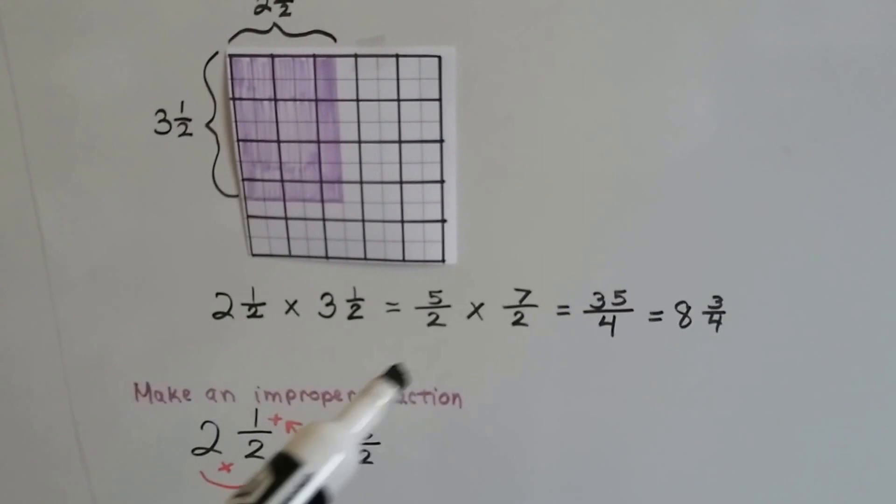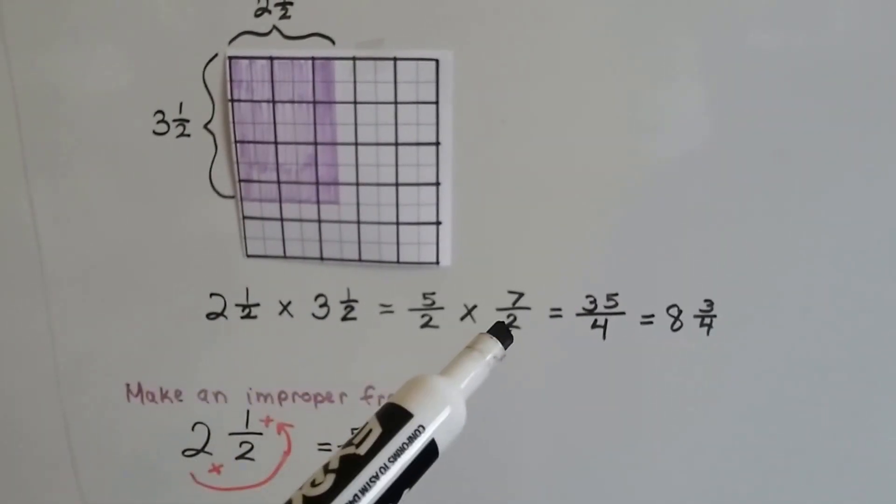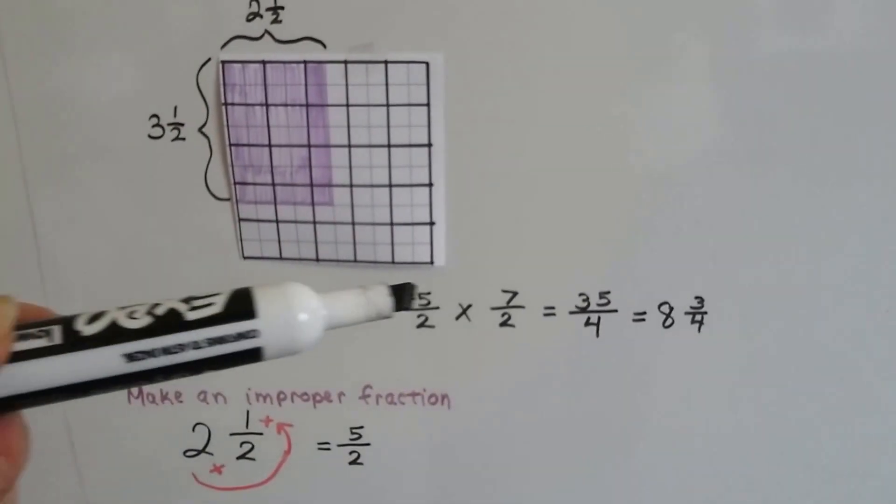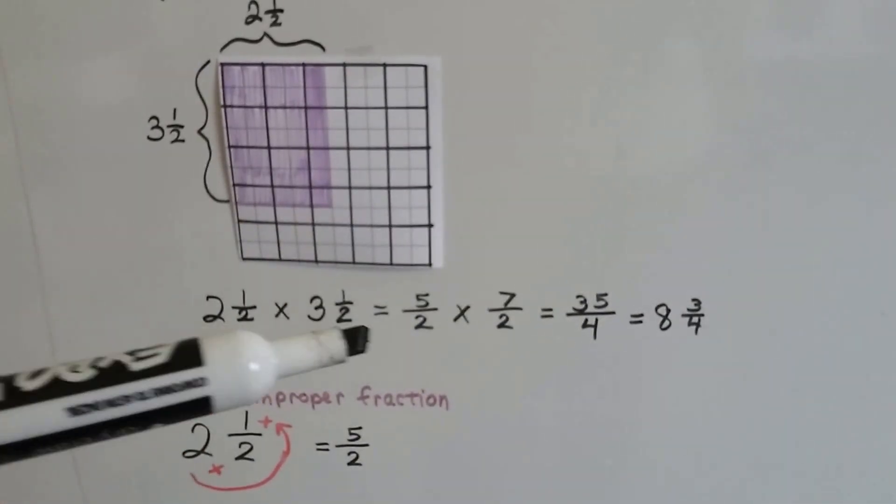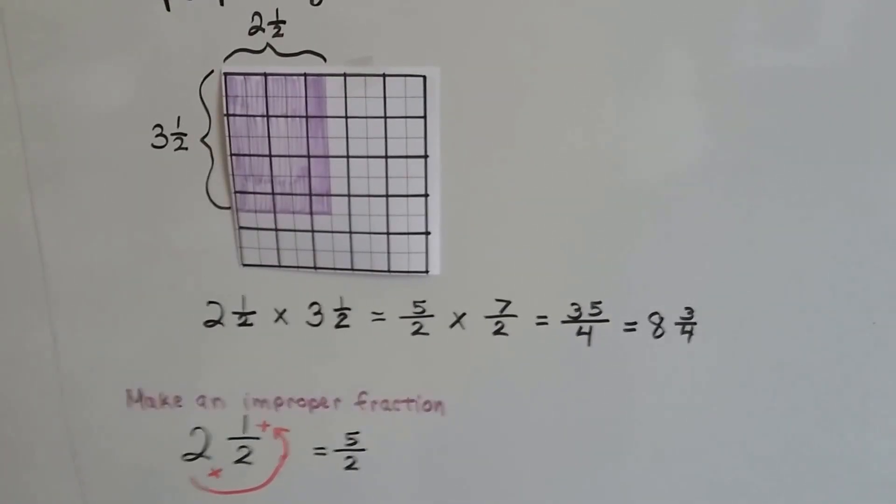The two and a half becomes five halves. And the three and a half becomes seven halves. And then we can just multiply straight across. Seven times five is 35 and two times two is four.